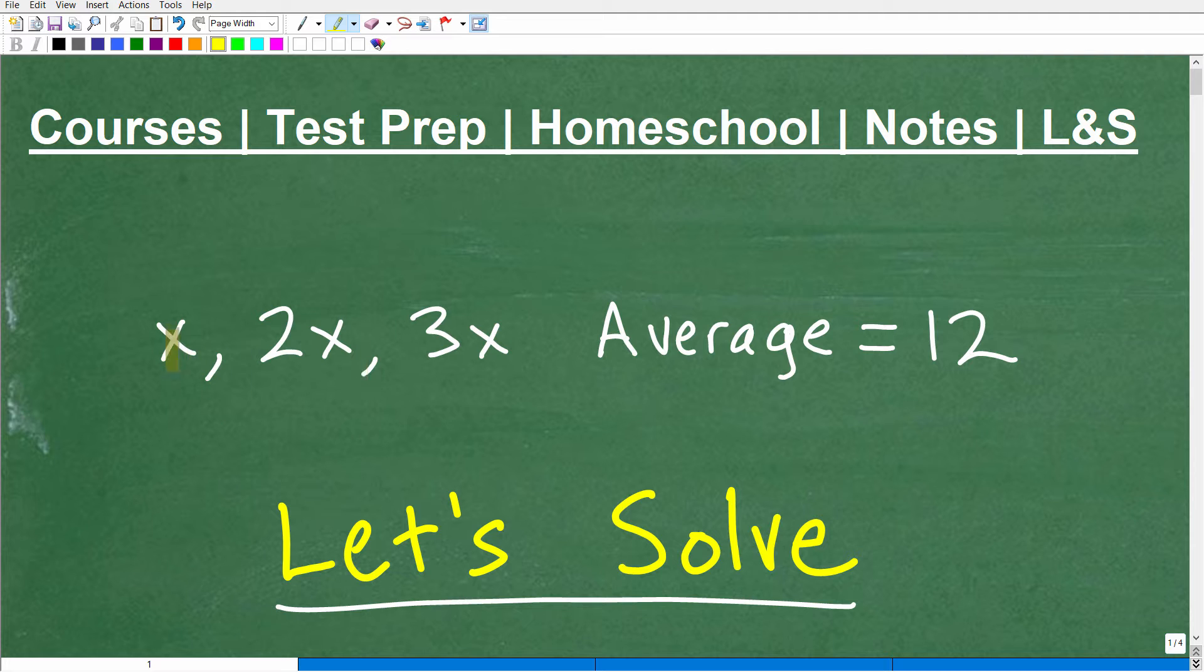So we're going to solve this problem, but let me tell you what the actual problem is. So here we have three numbers, x, 2x, and 3x. And we're told that the average of these three mystery numbers is 12. So the question is, what are the actual numbers?